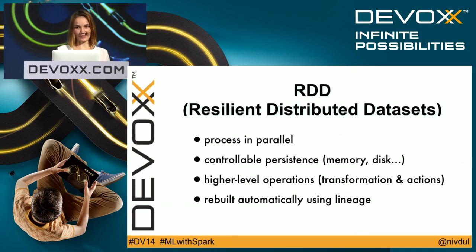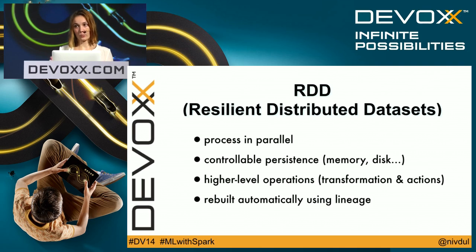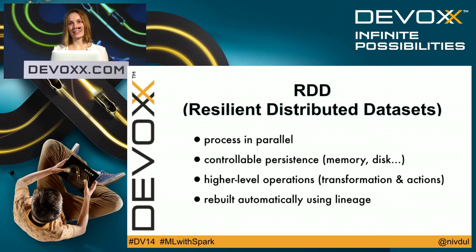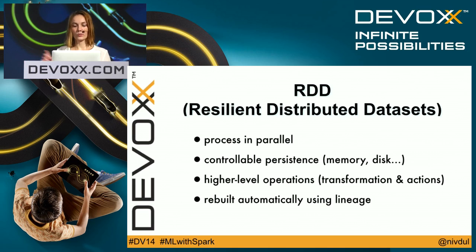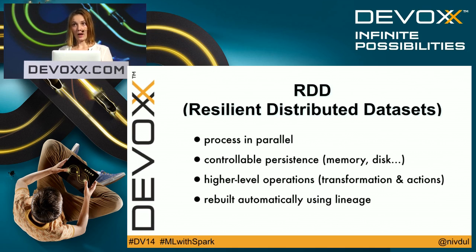An RDD is an immutable, distributed collection. RDDs have partitions that are sent across nodes of the cluster for parallel processing, and you can control the persistence — choosing memory, disk, or both. You have two operations on RDDs: transformations and actions. A transformation creates another RDD because RDDs are immutable, and transformations are lazy. An action returns a value after running the computation.